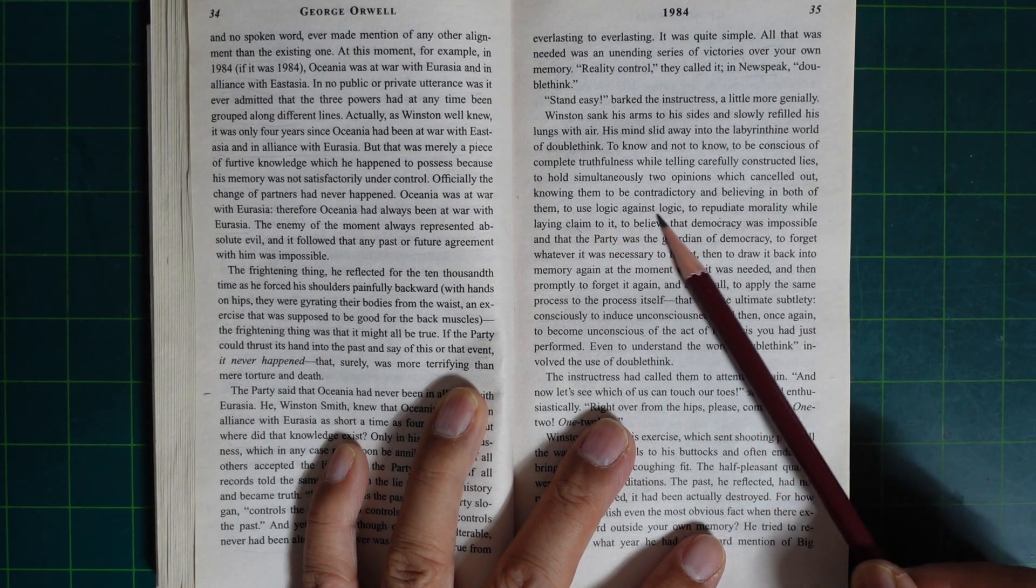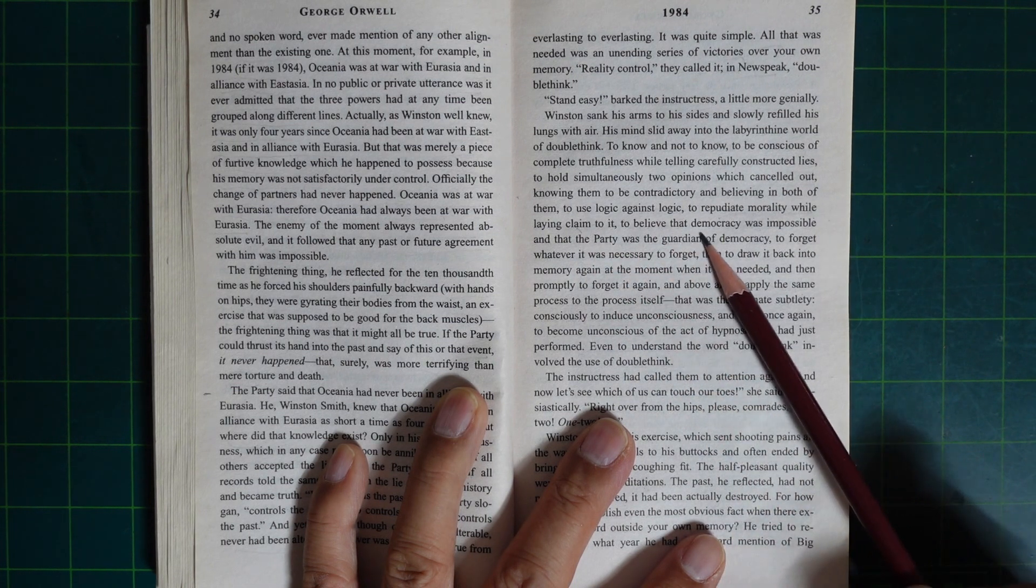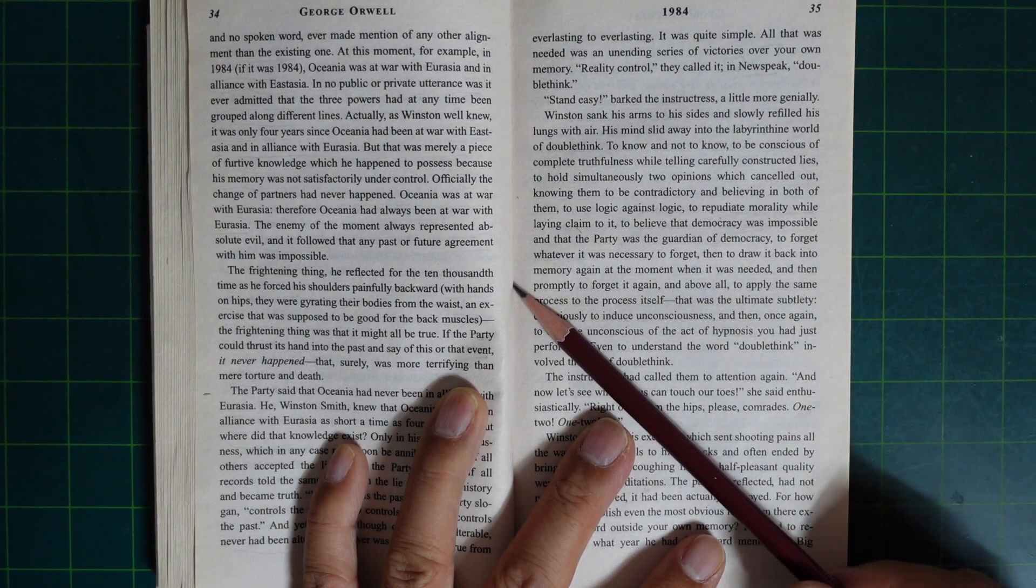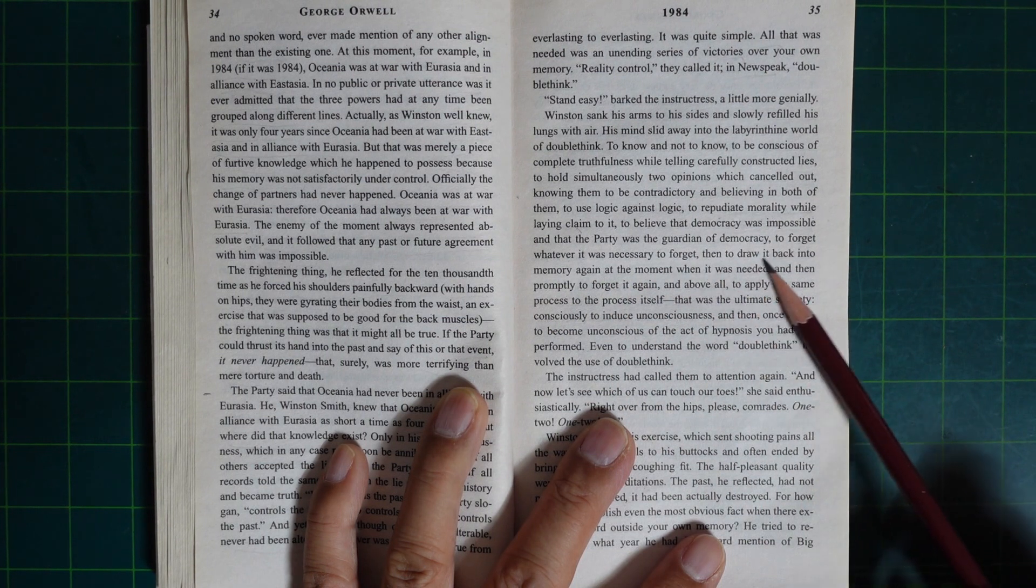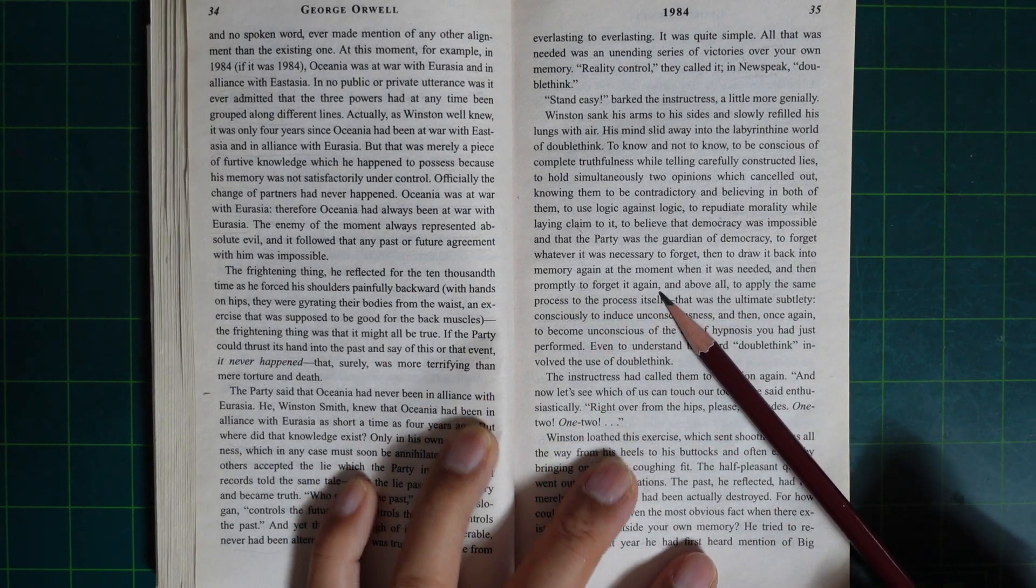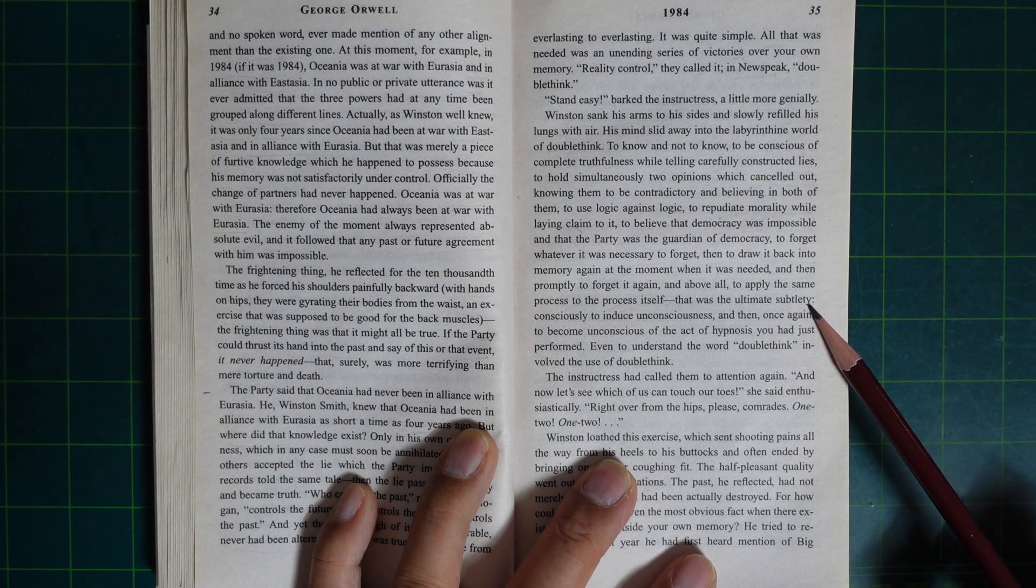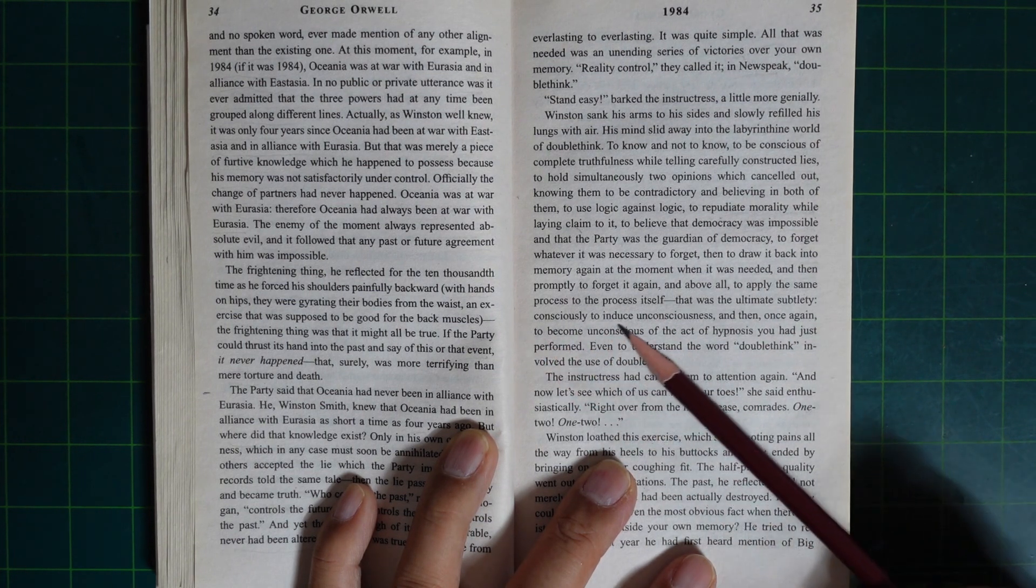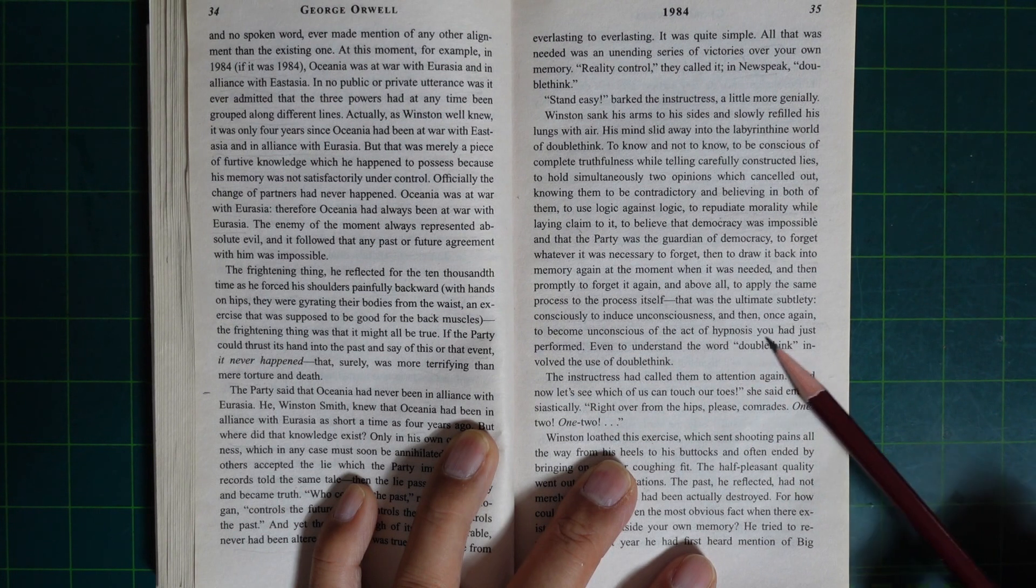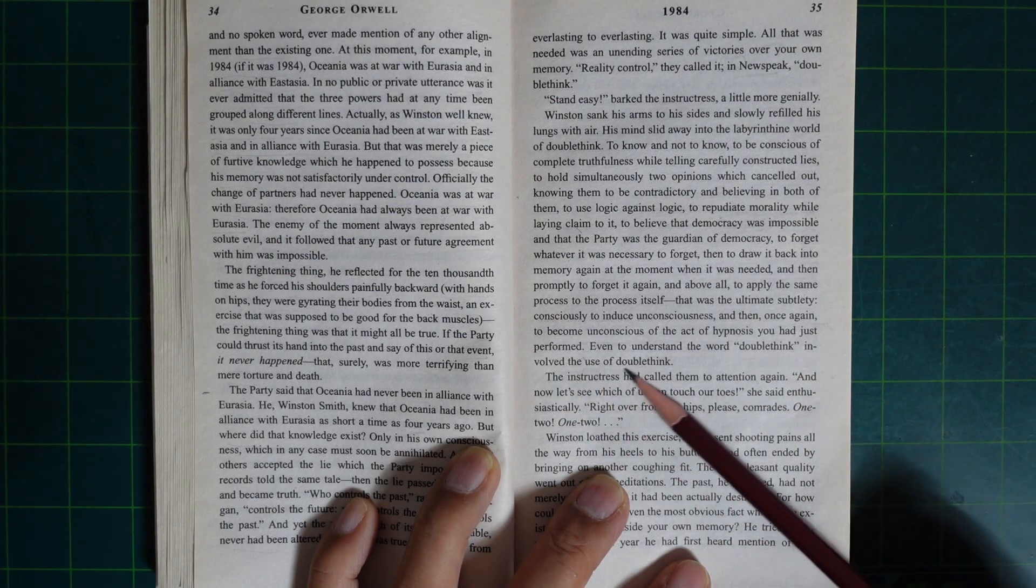To use logic against logic. To repudiate morality while laying claim to it. To believe that democracy was impossible and that the Party was the guardian of democracy. To forget whatever it was necessary to forget, then to draw it back into memory again at the moment when it was needed, and then promptly to forget it again. And above all, to apply the same process to the process itself. That was the ultimate subtlety. Consciously to induce unconsciousness, and then once again to become unconscious of the act of hypnosis you had just performed. Even to understand the word doublethink involved the use of doublethink.